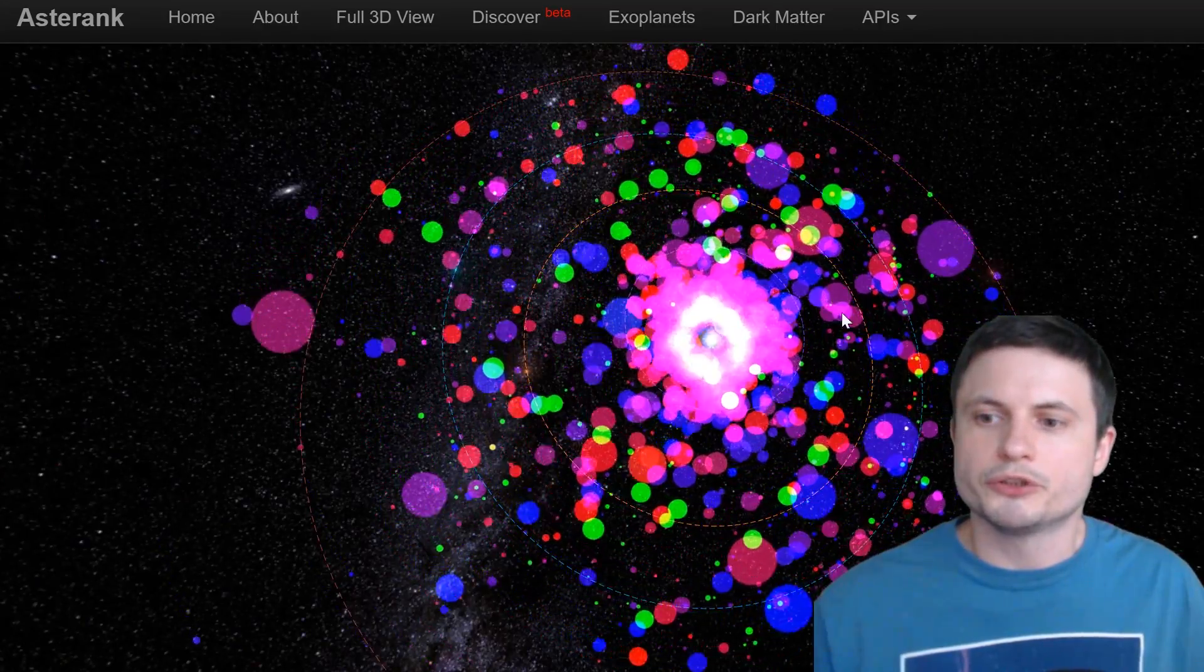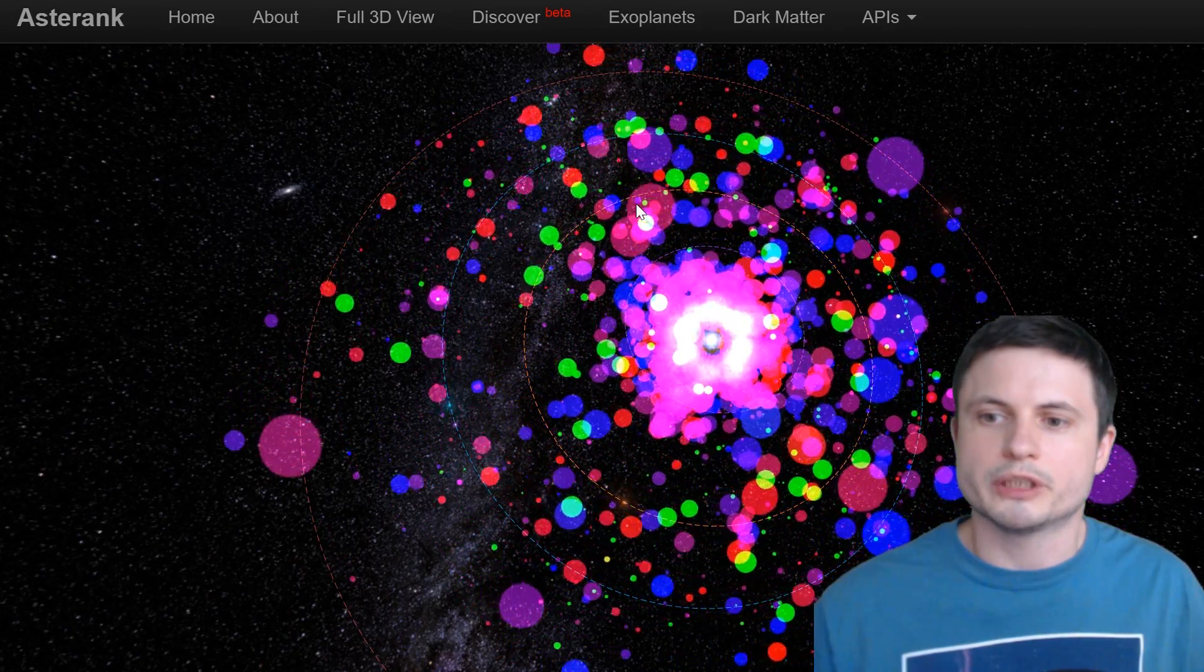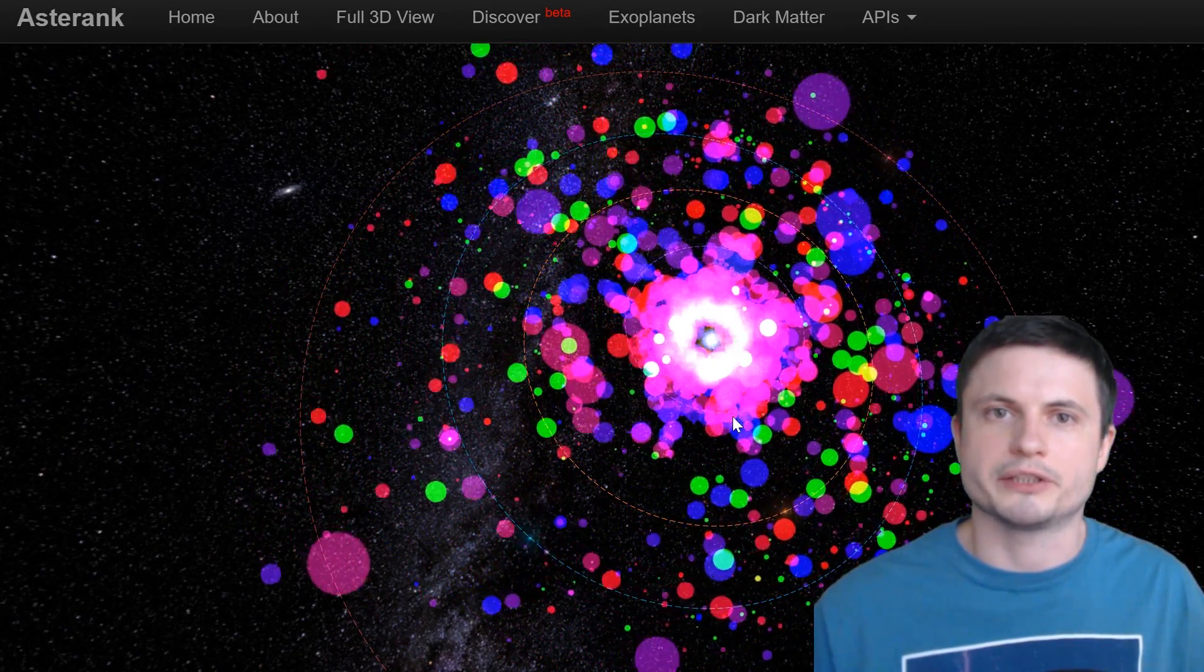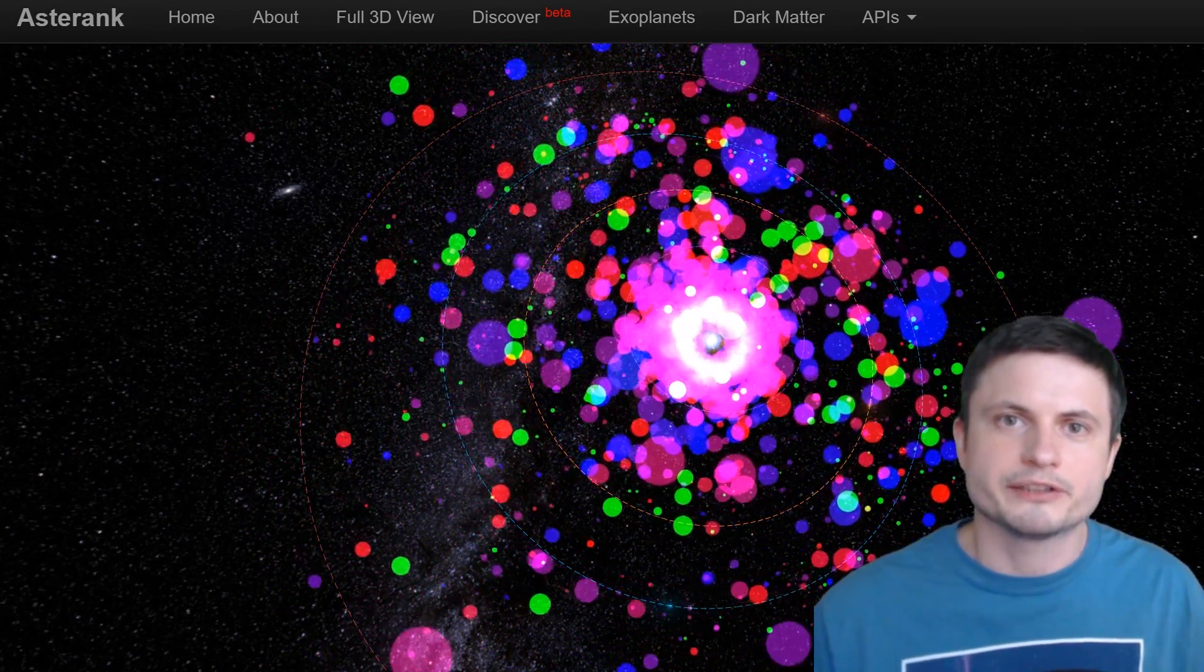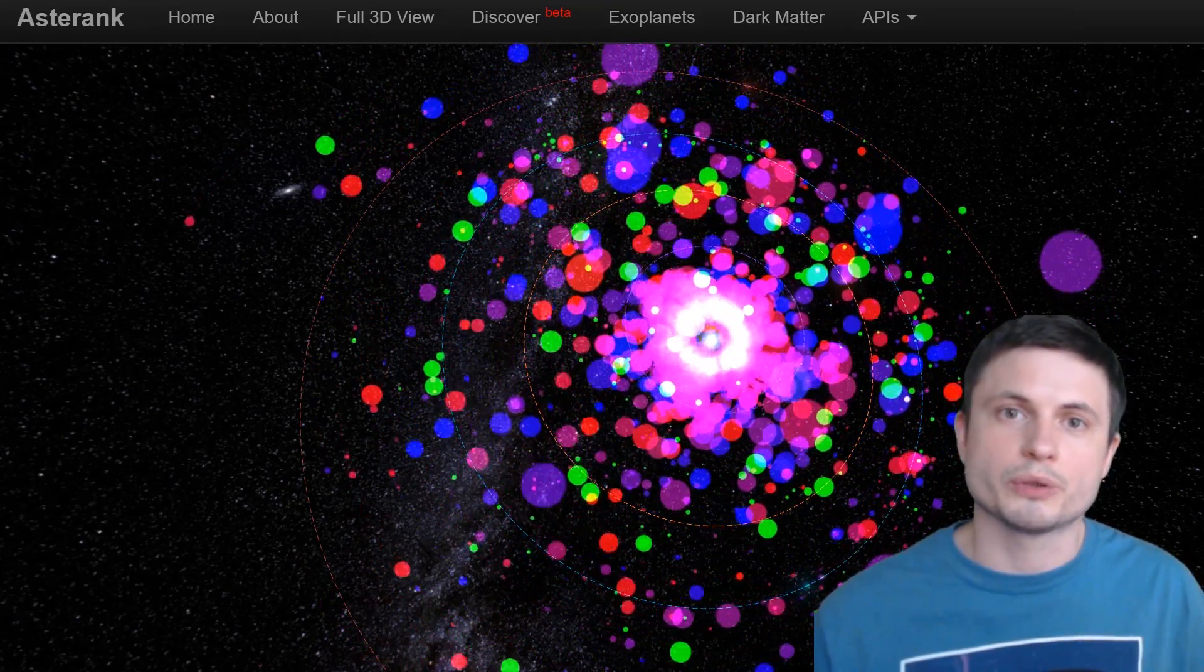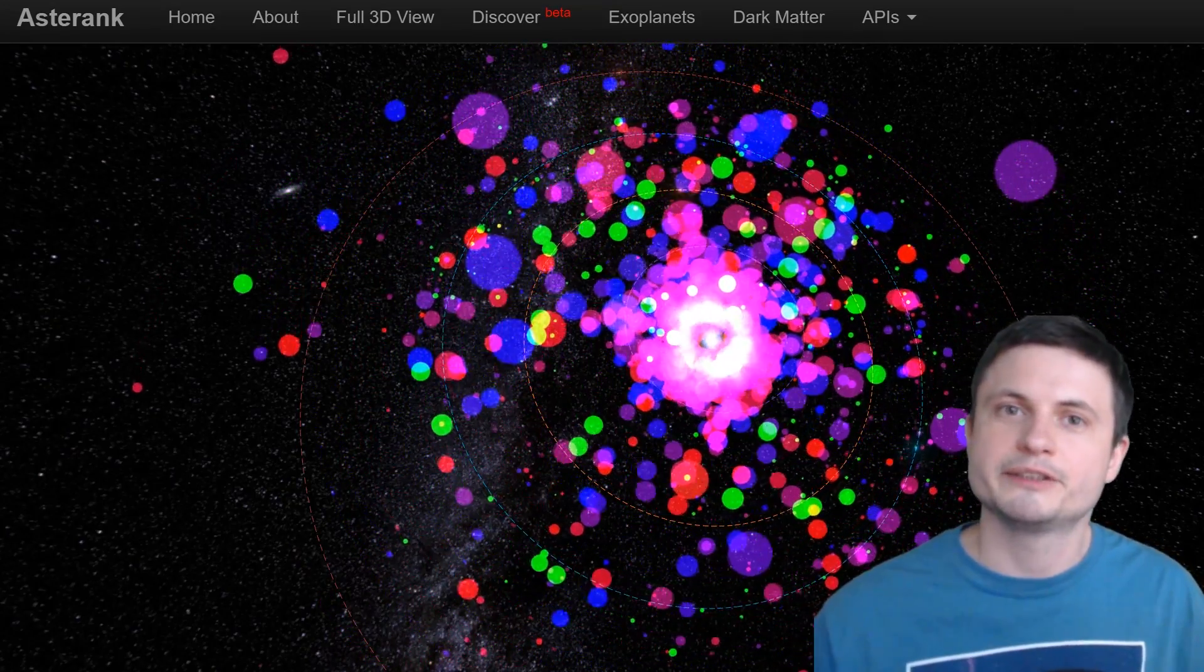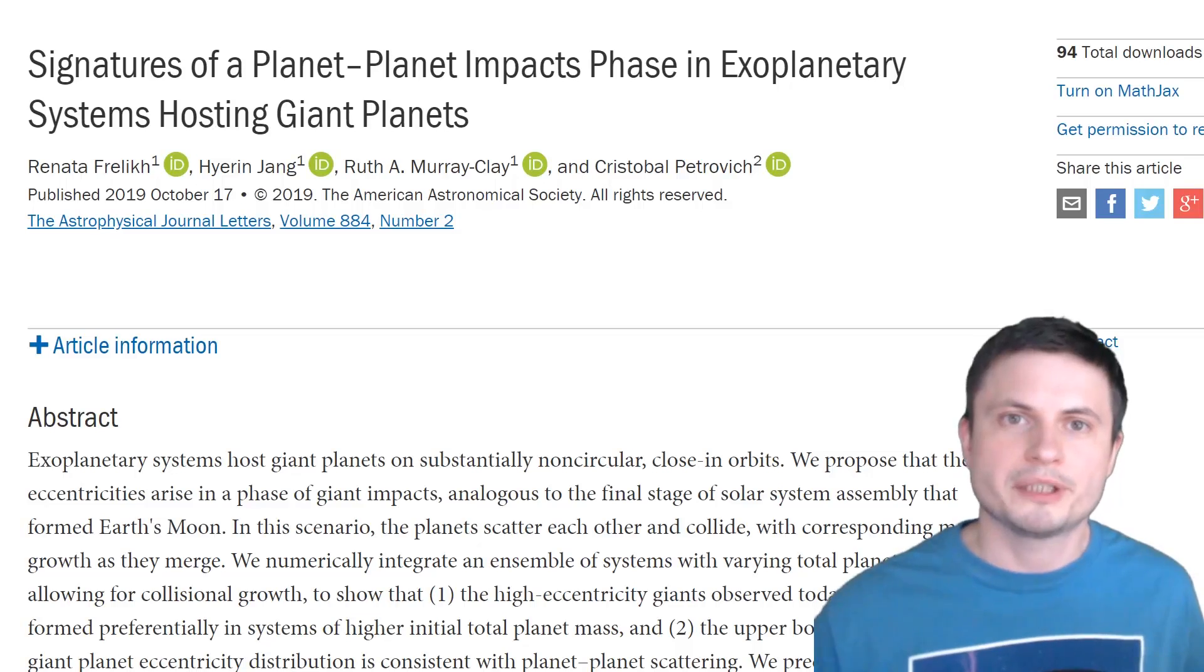But here if you look really closely, you'll see that there are some really large massive objects that do have an eccentric orbit. And these are the planets that scientists are really not sure how to explain just yet. Or at least they weren't until the paper that just came out. The paper that you can also find in the description below that essentially deals with this problem.